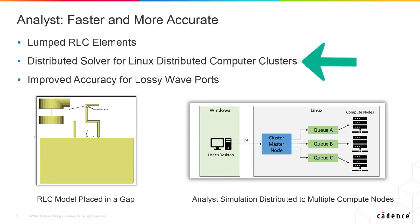A big improvement is again faster, better, more capacity. Analyst, which has always run on Linux, can now actually split the job up — one frequency, one layout — across multiple solvers and multiple computers to solve the matrix in parallel. That is a huge improvement. We can now do problems of up to a hundred million unknowns and more, so absolutely huge problems can be tackled in the Linux environment.